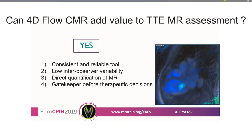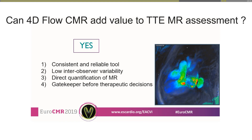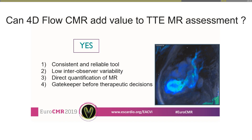We conclude that 4D flow MRI is a consistent and reliable tool with low inter-observer variability, providing direct quantification for mitral regurgitation. In our institution, it is now used as a gatekeeper before therapeutic decisions, especially surgical intervention. This is particularly important because many papers are now showing that a significant number of patients are being operated on without truly severe mitral regurgitation.